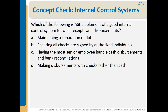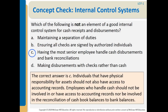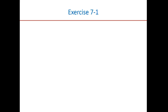Concept question: Which of the following is NOT an element of a good internal control system for cash receipts and disbursements? A. Maintaining a separation of duties. B. Ensuring all checks are signed by authorized individuals. C. Having the most senior employee handle cash disbursements and bank reconciliations. D. Making disbursements with checks rather than cash. The correct answer is C — individuals that have physical responsibility for assets should not also have access to accounting records or be involved in bank reconciliations.